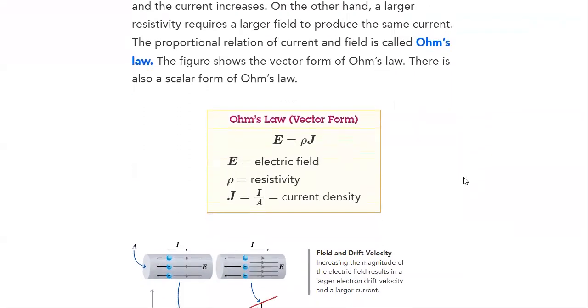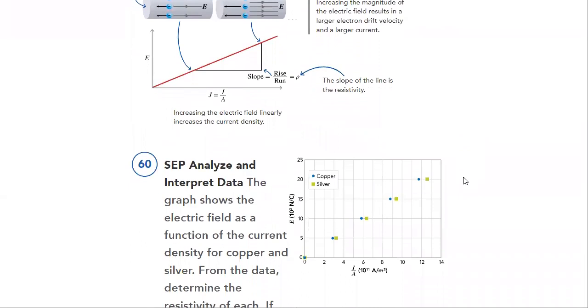Moreover, we will discuss Ohm's law, which states that the electric field is equal to the resistivity times the current density, which is equal to I over A.